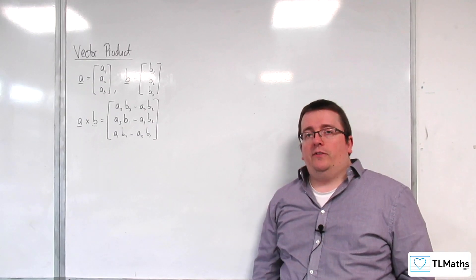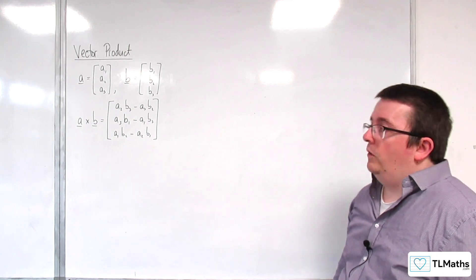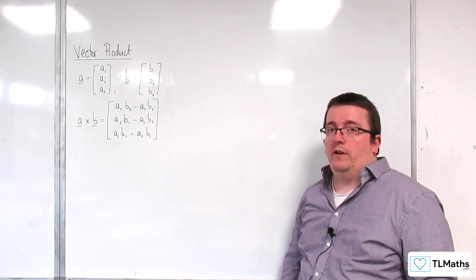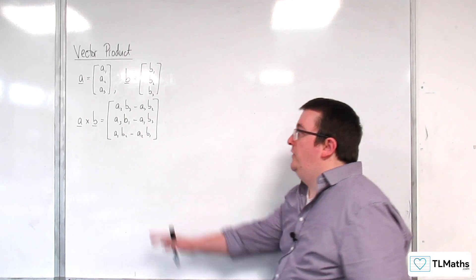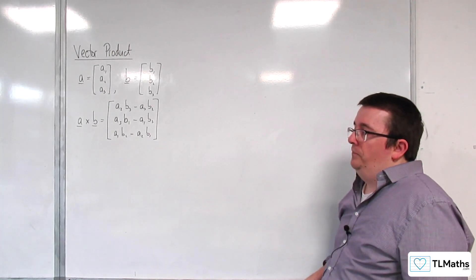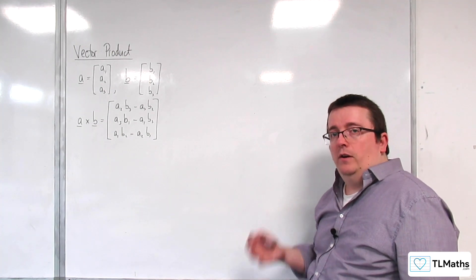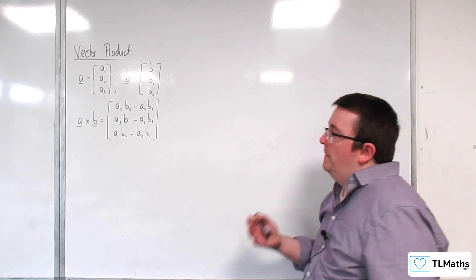So, it actually turns out there is another way of visualizing how to find the vector product to get this exact result. And it's actually by finding the determinant of a 3x3 matrix.